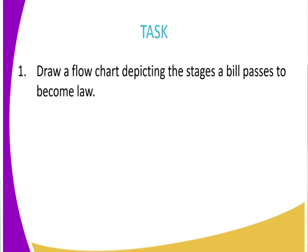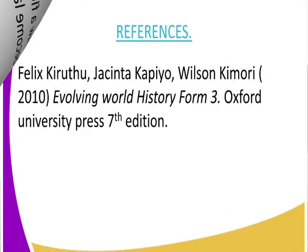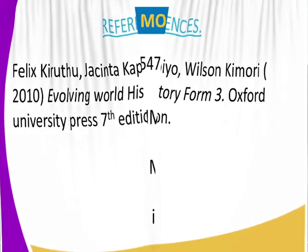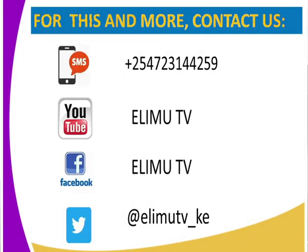Thank you, class. For assignment, draw a flowchart depicting the stages a bill passes to become a law — from the first reading to the presidential assent — to help you understand the process better. For reference, as always, it is Evolving World: History and Government. This is Limit TV, your favorite learning channel, and your teacher was Roger Mishira. Thank you, and we look forward to seeing you in the next class.